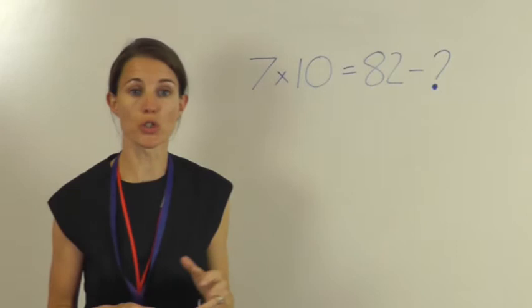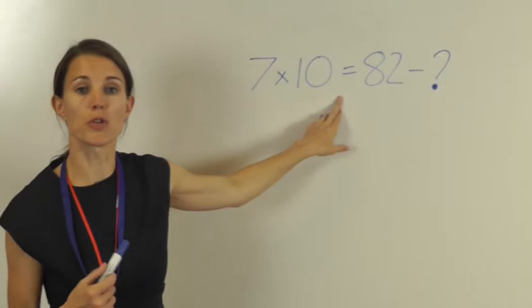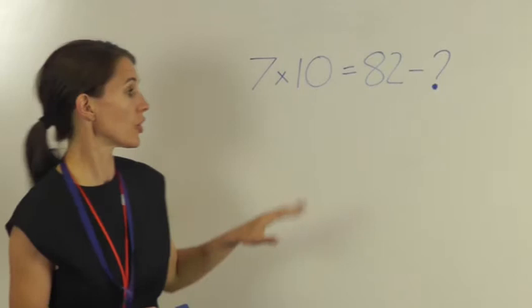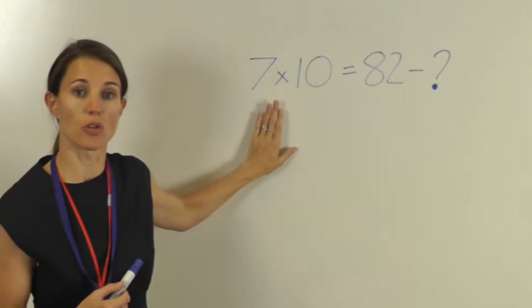The important thing is the equal sign in the middle. This tells us that both sides have to be equal. They have to have the same answer. So if I look at the left hand side, 7 times 10 gives me an answer of 70.